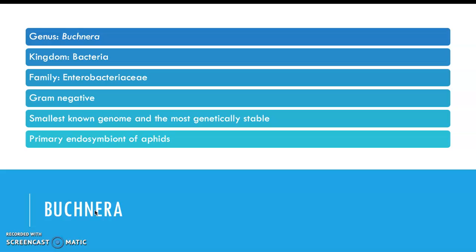So what is Buchnera? Buchnera is from the genus Buchnera, Kingdom Bacteria, Family Bacteriaceae, and this is a gram-negative bacteria. However, unlike other gram-negatives, this bacterium has evolved over time to lose its outer lipopolysaccharide layer, which makes sense since it's living inside a host — there's no need to keep those genes if they're not being used. That's part of why they have such a small genome and are so genetically stable.